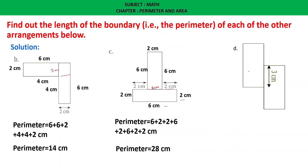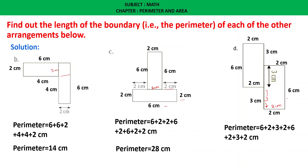Let us see question D. If we observe, this is 3 centimeters, then the other side is also 3 centimeters since the total rectangle length is 6 centimeters. The sides measure 6, 2, 3, 2, 6, 2, 3, and 2 centimeters. Therefore, perimeter equals 6 plus 2 plus 3 plus 2 plus 6 plus 2 plus 3 plus 2 equals 26 centimeters.